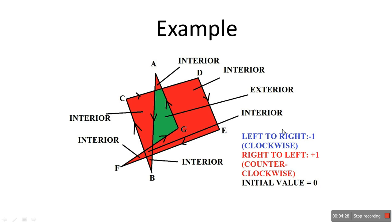You can also look at it this way: clockwise means the way the clock works — this direction. And counterclockwise means this opposite direction. So for example, this edge is going in the counterclockwise direction, and this edge is also going in the counterclockwise direction. That is from right to left.